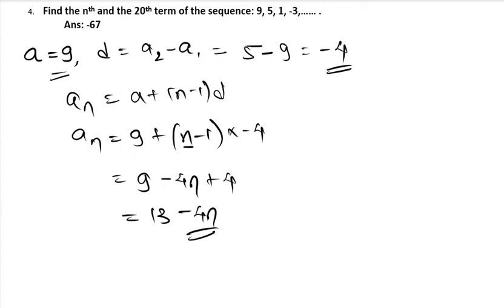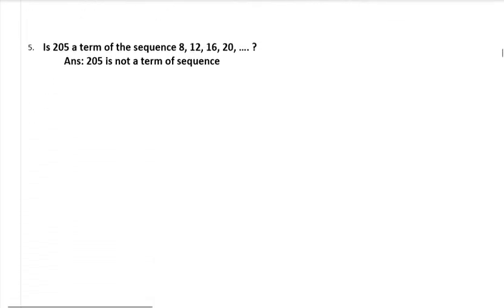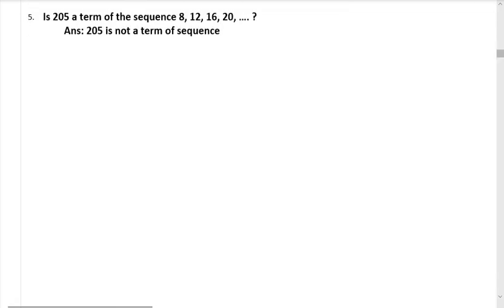Now to find the 20th term, substitute n equals 20 into the nth term formula: 13 minus 4 times 20 equals 13 minus 80 equals minus 67. So the 20th term is minus 67. If the video is going too fast, you can always pause and rewatch — unlike a live classroom, on YouTube you can watch a solution five times or message for doubts.